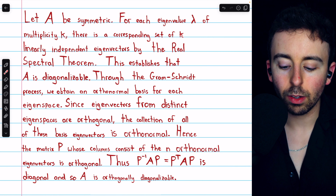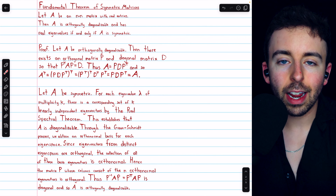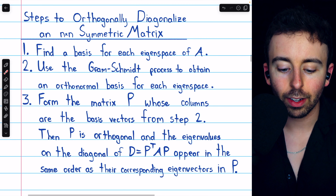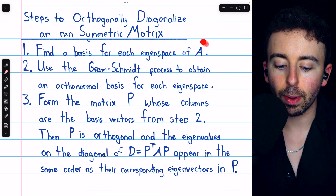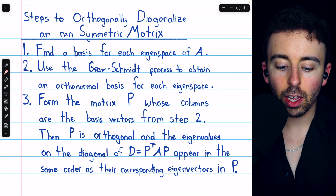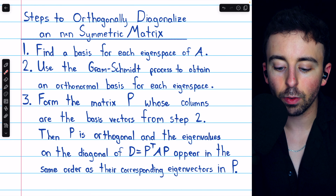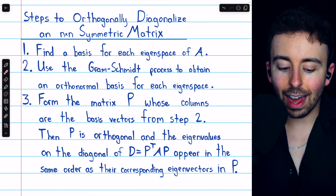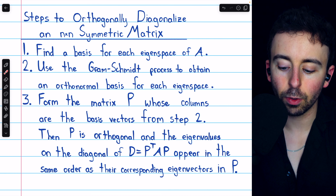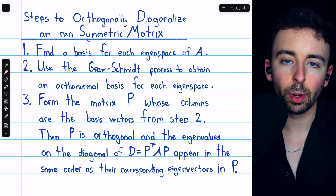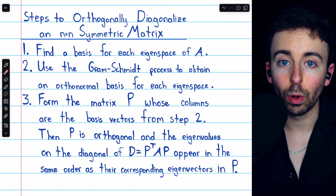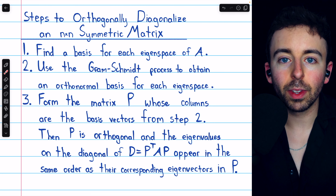We have that P inverse AP, which is the same as P transpose AP, is a diagonal matrix. That establishes the theorem. From the second direction of this proof, we see the steps to orthogonally diagonalize an n by n symmetric matrix. First, find a basis for each eigenspace of the matrix. Then, use the Gram-Schmidt process to obtain an orthonormal basis for each eigenspace. Finally, form the matrix P whose columns are those orthonormal basis vectors. The eigenvalues on the diagonal of D equals P transpose AP appear in the same order as their corresponding eigenvectors in P. In short: find the eigenvectors, make them orthonormal, and use them to construct the columns of P.